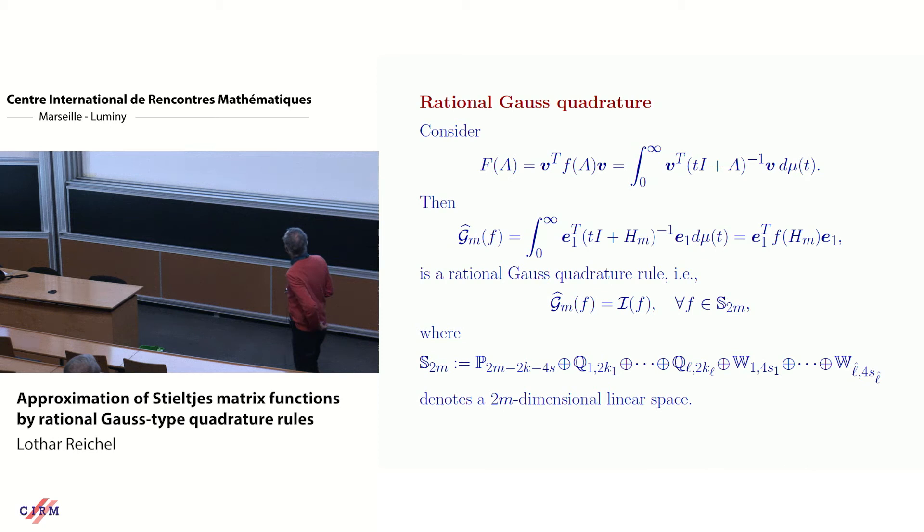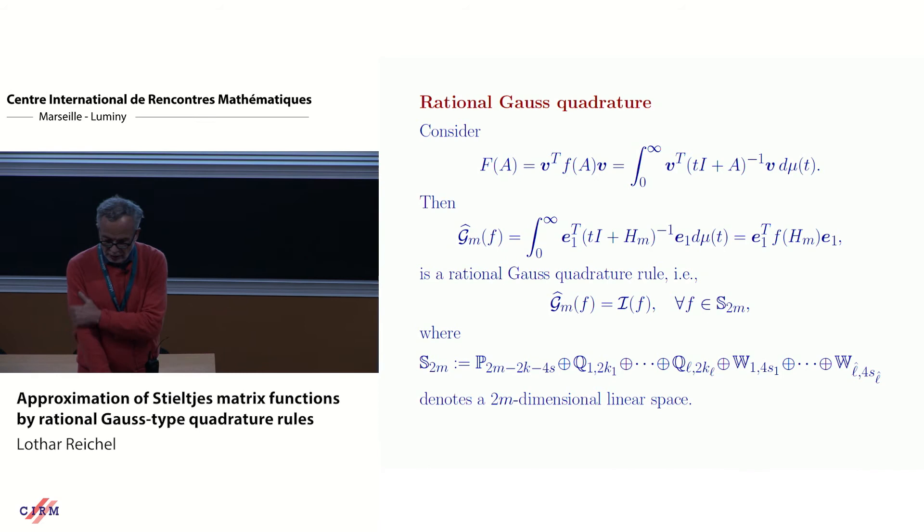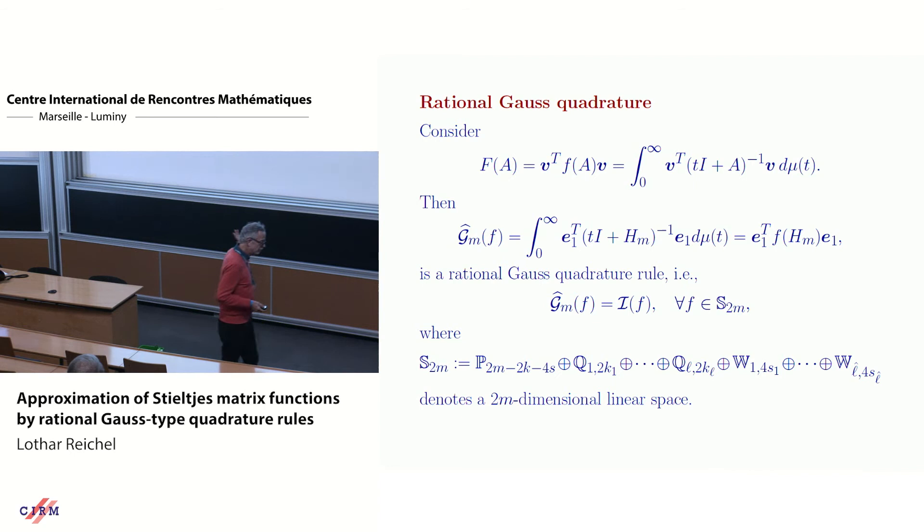Because what these rational Gauss quadrature rules are, you have a denominator. You have a numerator and denominator because you have a rational function. And then you think of the denominator as being part of the weight function, and then we construct a standard Gauss rule for this weight function. And then one switches back and says, oh yeah, this is my rational quadrature rule. And so in a way there's nothing new here, but they're quite useful. And the good news is that many things that we like, for instance, one of the things is that one finds the weights by computing the first components of the eigenvectors of the tridiagonal matrix and squares them.